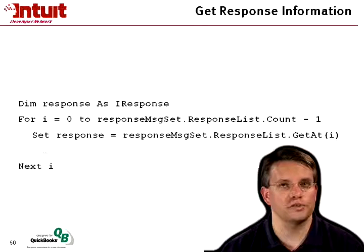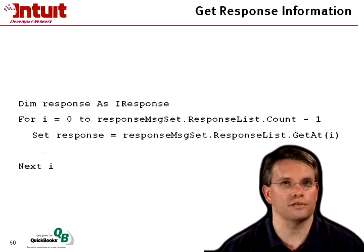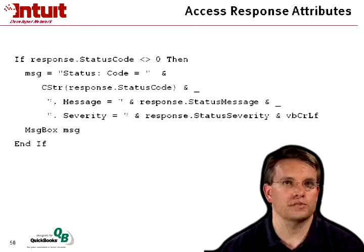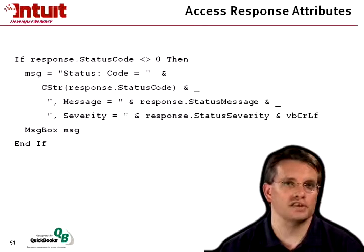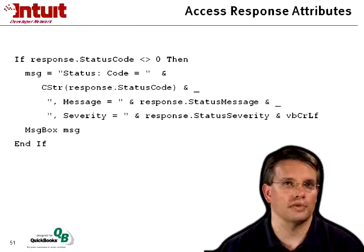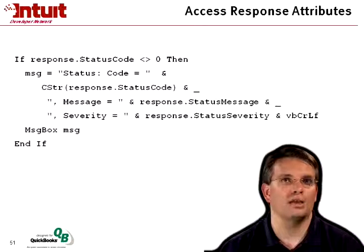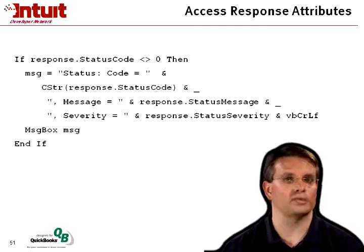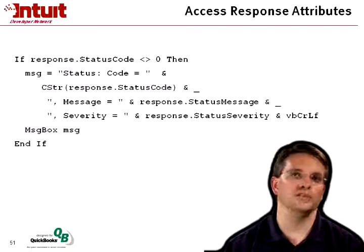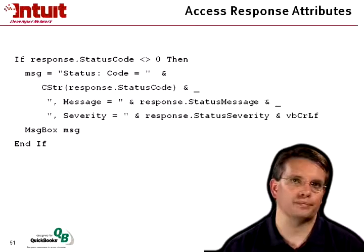To get to the attributes of a specific response, you just hit the dot and you see the attributes available to you. In this case, the status code, making sure that it's not zero. And then I can look at the status message, status severity, and so forth, to build a message box to indicate that an error happened.